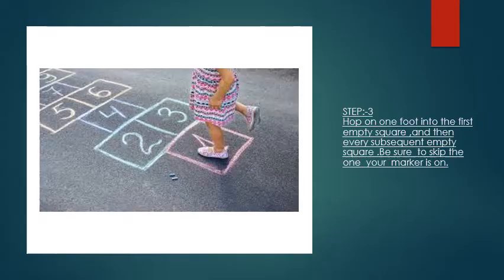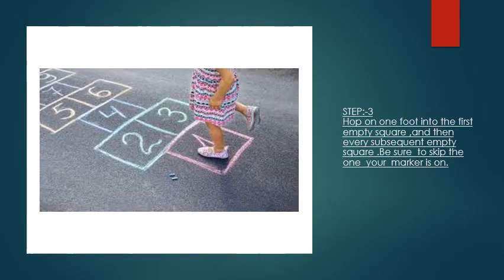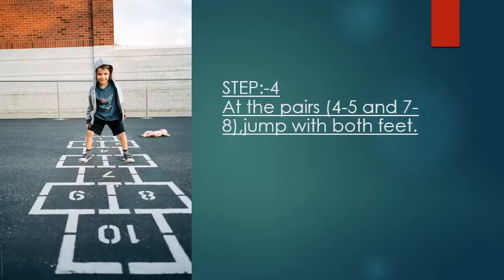And then what you have to do is, you have to hop on one foot into the first empty square and then every subsequent empty square, one foot into the second square. Be sure to skip the one on which marker is on. Then on the pairs like four, five and seven, eight, jump with both feet.